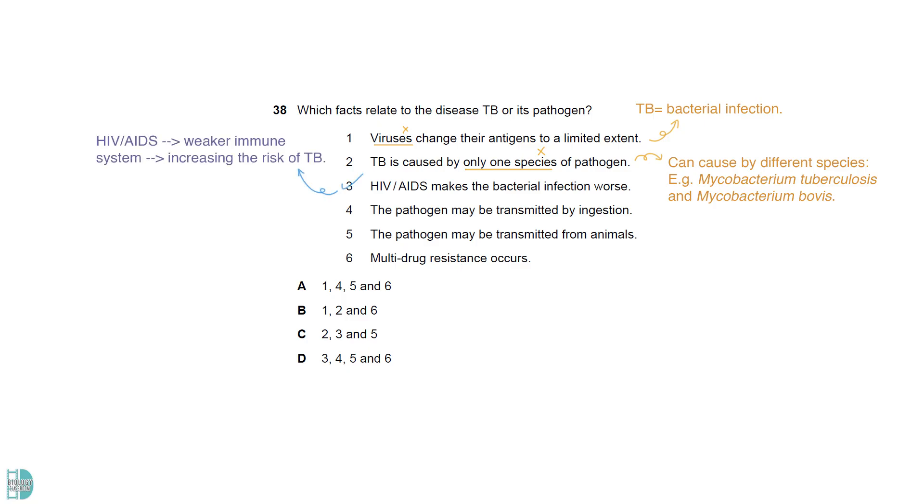Three is correct. HIV-AIDS leads to a weaker immune system, increasing the risk of TB. Four and five correctly describe the transmission of Mycobacterium bovis. Six is true. This is one of the major problems in controlling TB.